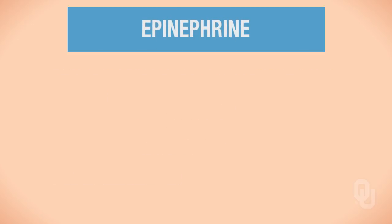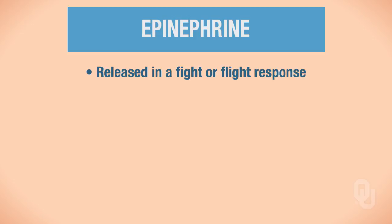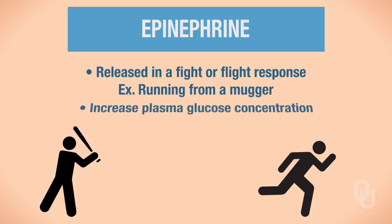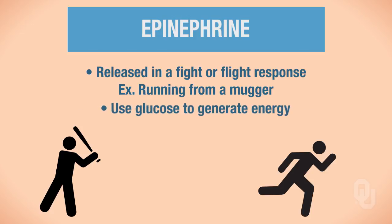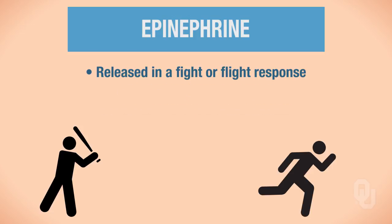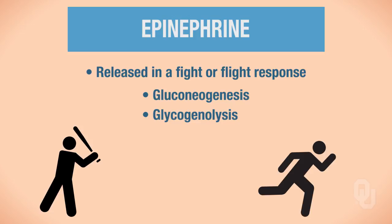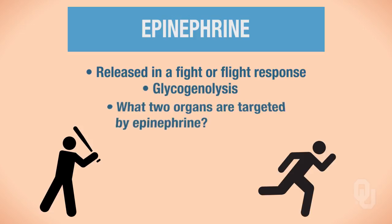Epinephrine — also called adrenaline — is released in a fight-or-flight response. For example, if you are running from a mugger, it would be helpful to have increased plasma glucose so you can generate energy. When epinephrine is released during fight-or-flight, it causes gluconeogenesis as well as glycogenolysis. When glycogenolysis occurs, what two organs are targeted by epinephrine?